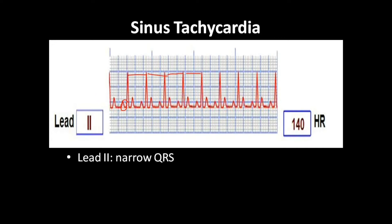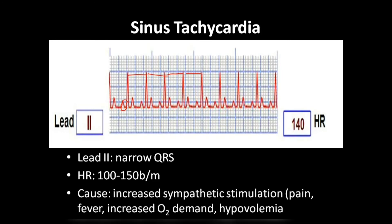A narrow QRS complex is a typical feature of sinus tachycardia, and the heart rate will lie between 100 to 150 beats per minute. The cause for this tachycardia is increased sympathetic stimulation, mainly due to pain, fever, increased oxygen demand such as mountain climbing, or hypovolemia due to low blood volume.